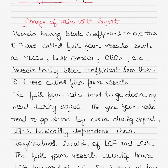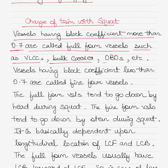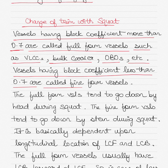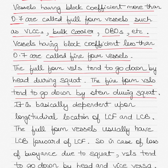Regarding change of trim with squat: vessels having a block coefficient more than 0.7 are called full-form vessels, such as VLCCs or very large crude carriers, bulk carriers, and oil and bulk ore carriers. Vessels having a block coefficient less than 0.7 are called fine-form vessels. Full-form vessels tend to go down by the head during squat, while fine-form vessels tend to go down by the stern during squat.